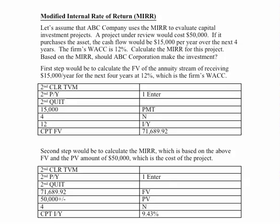The first step is to calculate the future value of an annuity stream. According to the table, this is how we would set it up, just like we did under Chapter 9. $15,000 each year for the next four years — that's an annuity amount, so we enter that as payment. Four years. And we're going to use 12%, because that is the weighted average cost of capital. The future value of that sum is $71,689.92.